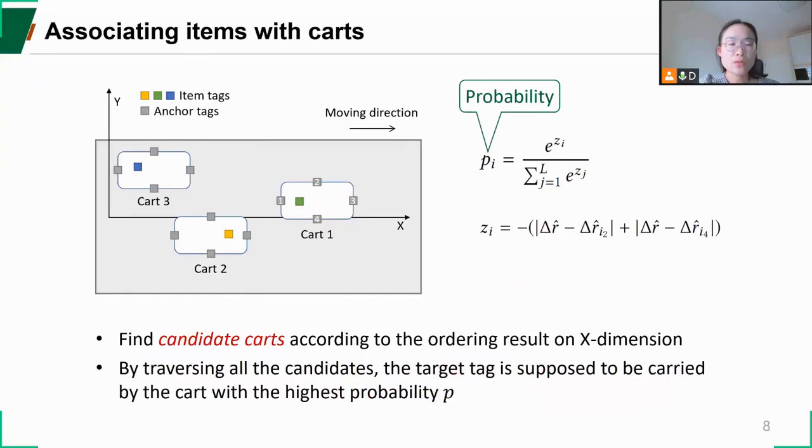Remember our final goal is to determine which cart an item belongs to. So for each item, we first find all the candidate carts according to the ordering result on x-dimension. Then we compute a score p to measure the probability that every candidate indeed carries the item according to the ordering result on y-dimension. Finally, by traversing all the candidates, the target item is supposed to be carried by the cart with the highest probability. That's the whole workflow of our approach.